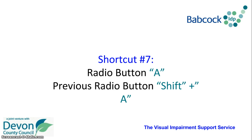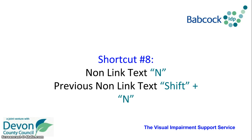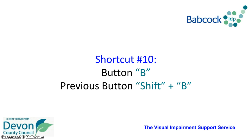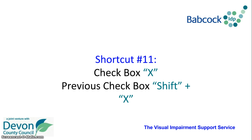To go to the next radio button press A, and to go to the previous radio button press Shift and A. To find the next checkbox press X, and to find the previous checkbox press Shift and X.